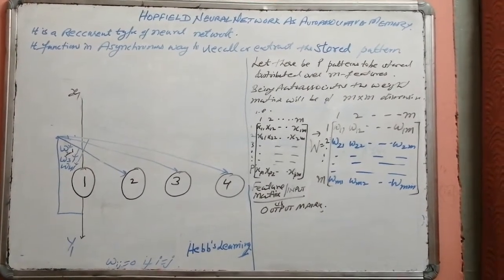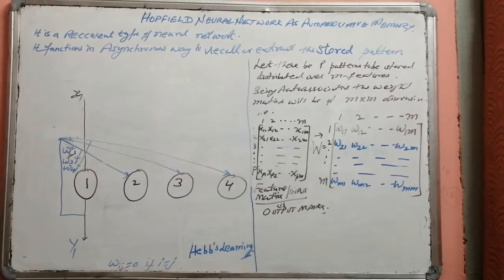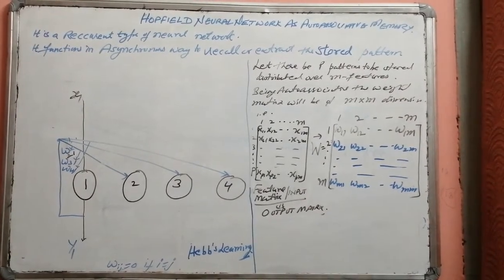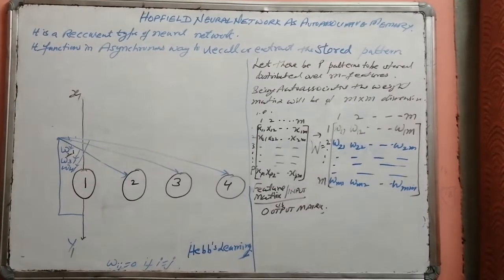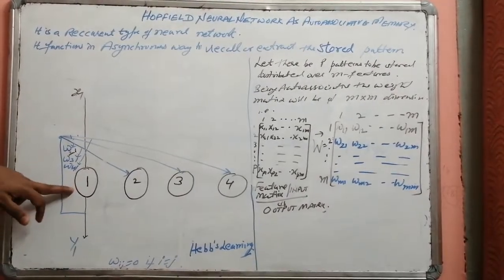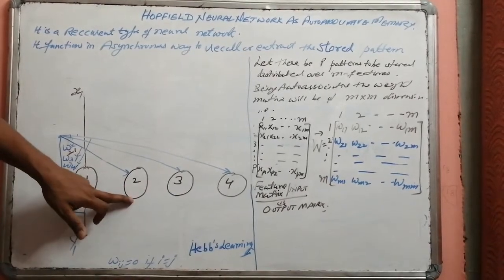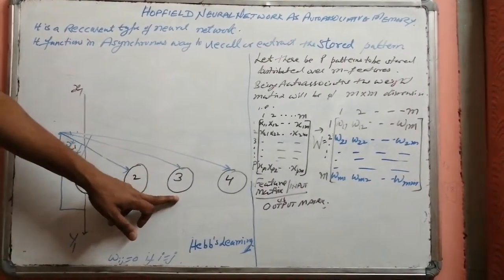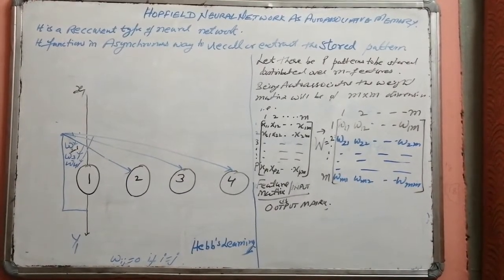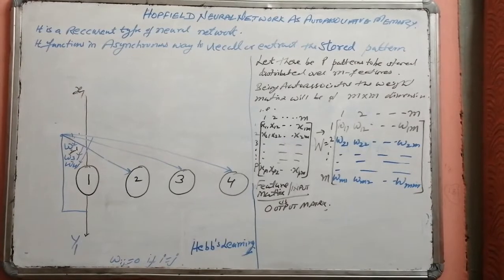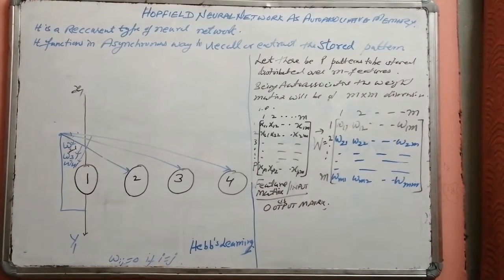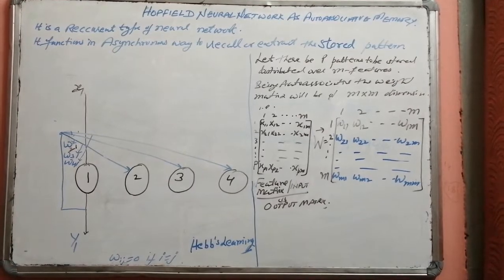Now the overall architecture of the Hopfield neural network can be seen as having four neurons, or we want to store the patterns distributed over four features. So each neuron represents a feature number and output number. There are equal number of input neurons as output neurons because it is a kind of auto-associative memory only.